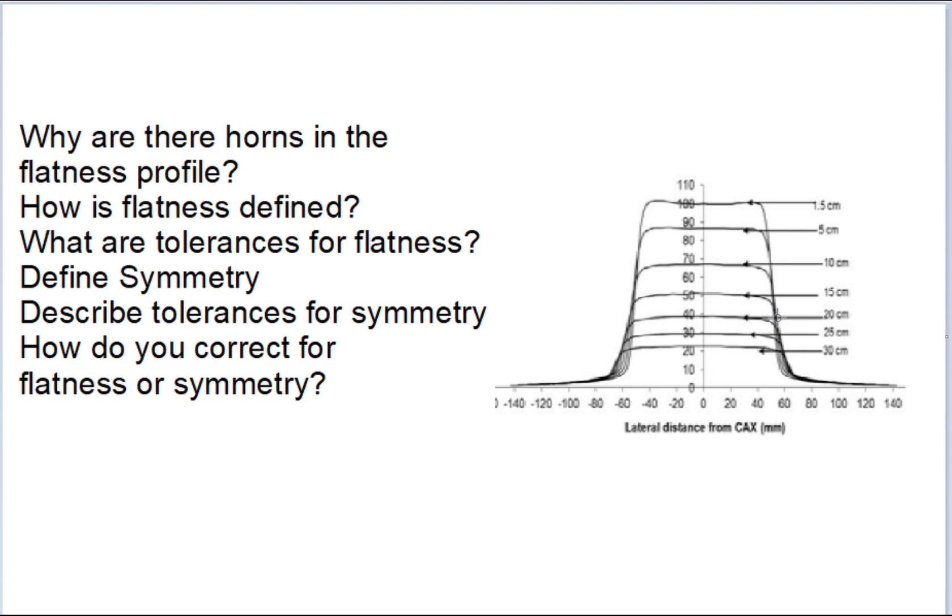After the electron hits the target, a Bremsstrahlung distribution that is pointed is caused. One thing that is important is to know that unlike most of the 2D diagrams that you see for linacs,